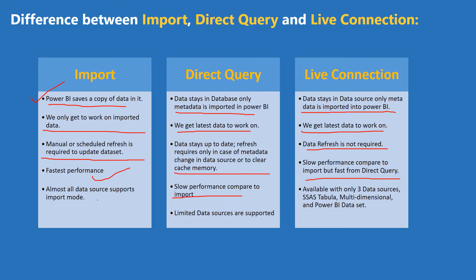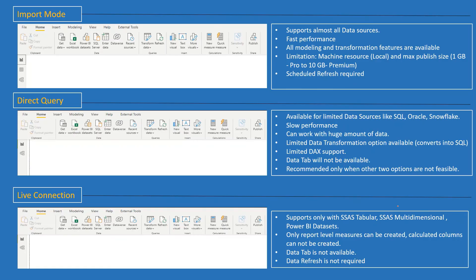Regarding the number of data sources supported: import supports almost all data sources, though there are some exceptions. Direct query supports limited data sources. Live connection as of now is only limited to three data sources: SSAS tabular model, Analysis Services multidimensional model, and a Power BI dataset. A Power BI dataset is an existing dataset published on the Power BI service, either as part of a report or as a dataset itself. Let's jump to the next slide for a few more differences.